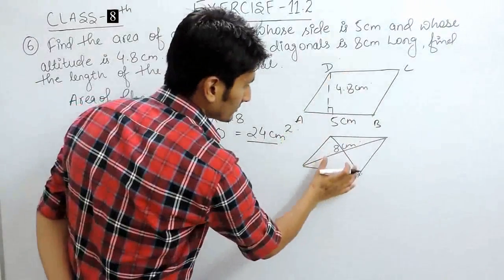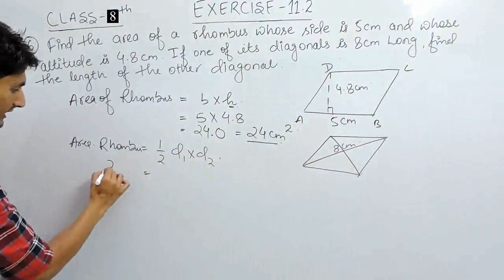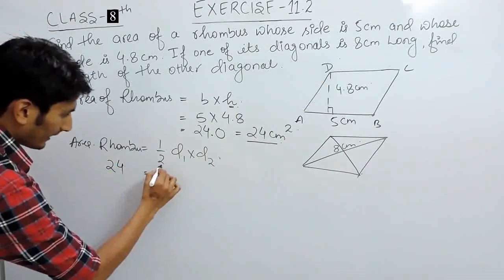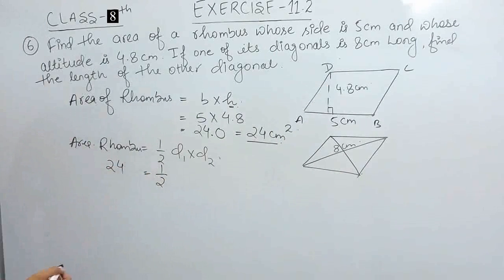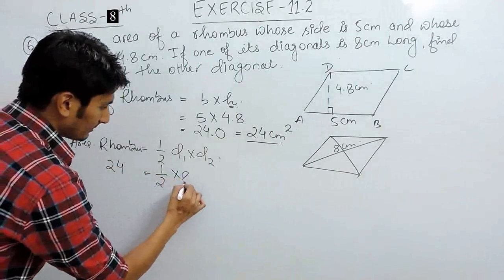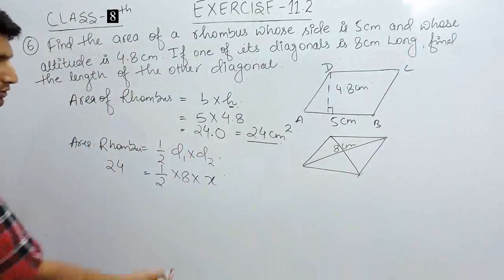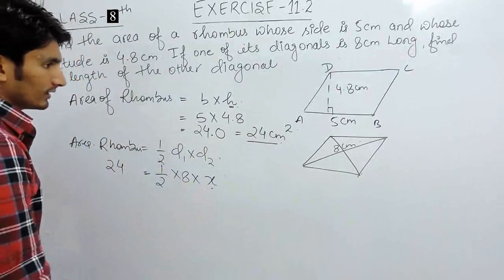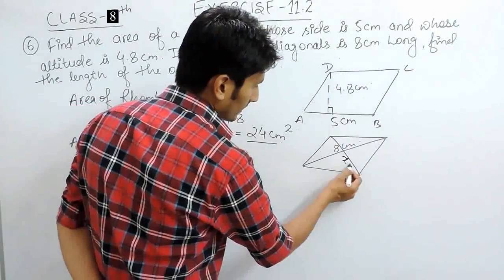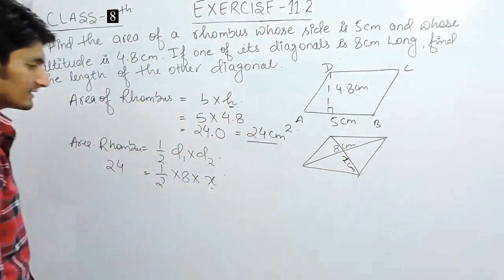The area of this same rhombus we know that is 24 centimeter square and this is half and one of its diagonal is equal to 8 centimeter. You have to find another. So, let's suppose the other diagonal, the length of the second diagonal is x centimeter.